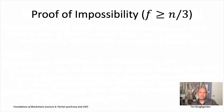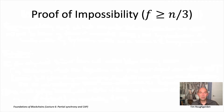We left off the last video with the basic intuition about why this famous impossibility result is true. The result states that in the partially synchronous model you cannot achieve consistency plus eventual liveness unless the number of Byzantine nodes is strictly less than a third. This is that magical 33% threshold that you see in lots of different blockchain white papers and discussions all over the place.